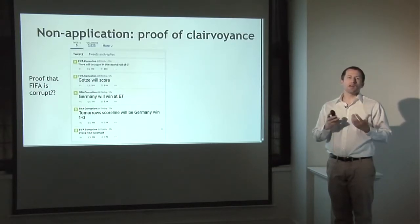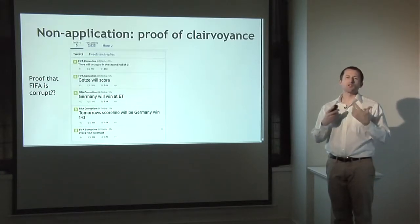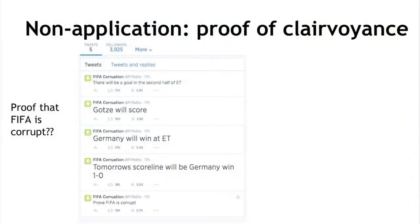One thing we can't do — which would be very nice if we could — is prove clairvoyance, the ability to tell the future. You might think that secure timestamping would be a way to prove we know something before other people, before it actually happens. The idea would be that we publish a commitment to an event that's about to happen, say the outcome of a sporting event or an election, and then later reveal that information to prove we knew the outcome ahead of time.